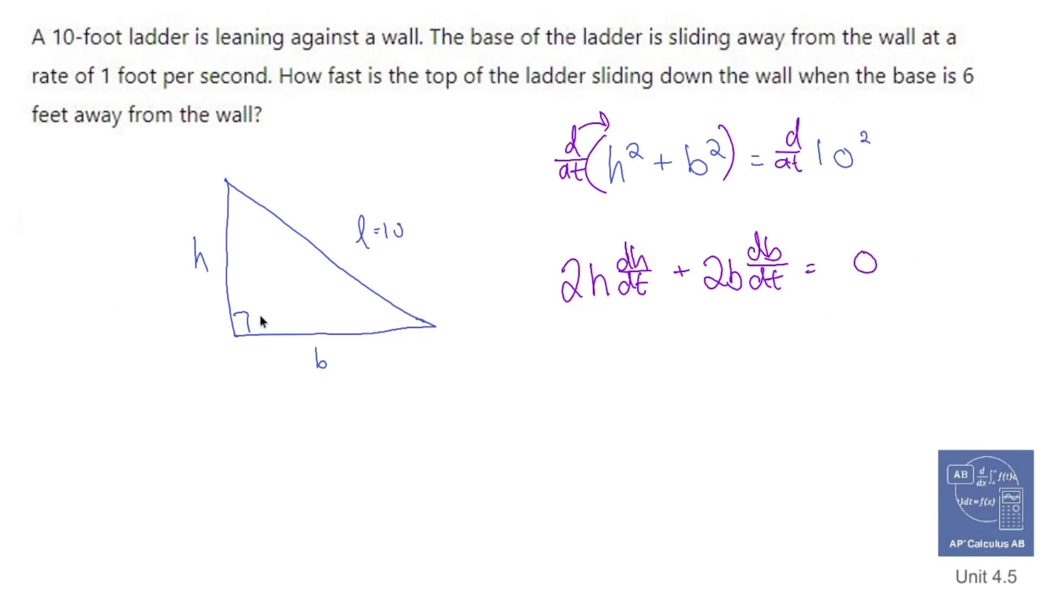So let's see what I also know because I seem to be missing a little bit of information. I know at this very moment, I care about the fact that the base is 6 feet away from the wall. So B is 6. I also know that if I use Pythagorean theorem, I can write out H squared plus 6 squared equals 10 squared.